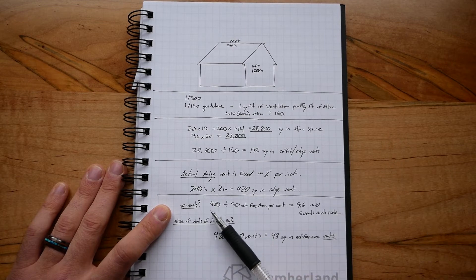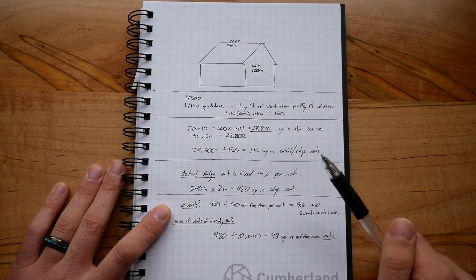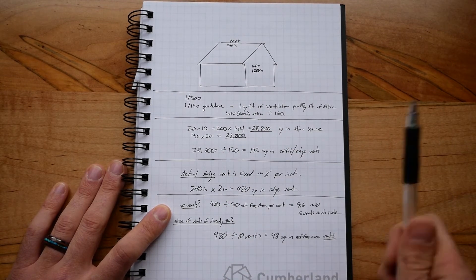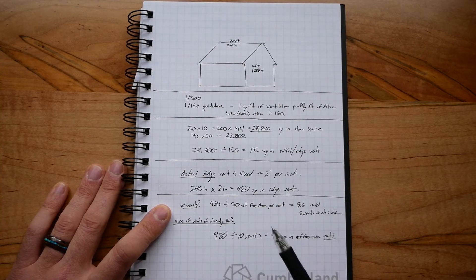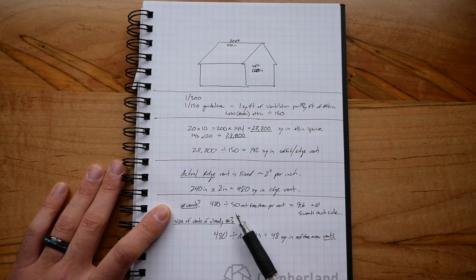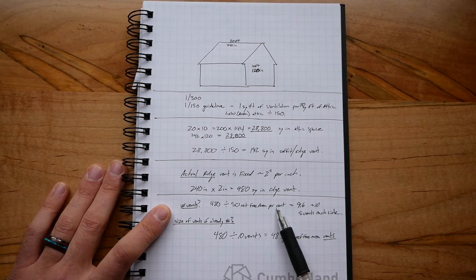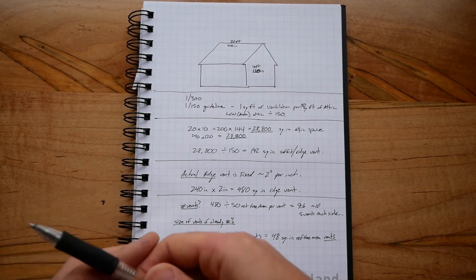Let's say we have this 480 square inches of ridge area and we know that we have vents that are 50 net free area per vent. So what is net free area? Well, let's take a look here.